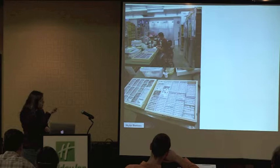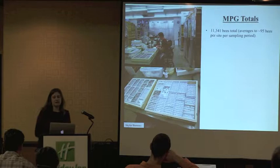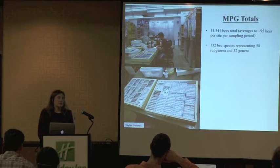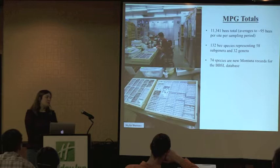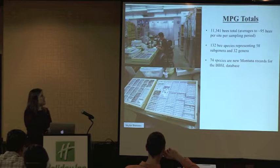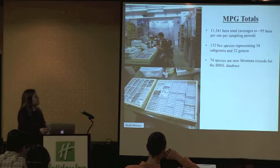From our five sampling efforts this year we caught 11,000 bees. Of those, 132 bee species were identified, representing 58 sub-genera and 32 genera. Remarkably, 74 of those 132 species are new Montana records for the Bee Biology and Systematics Lab database.